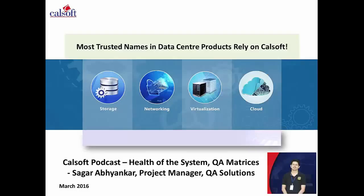A very warm welcome to the CalSoft Podcast Series. This is your host, Mark Roderick. With me today I have Sagar Abhyankar. We've had Sagar on the show before — welcome back again, Sagar. A quick recap on Sagar: he's a Scrum Alliance Certified Scrum Master with 10 plus years of experience in testing and delivering world-class products developed using the waterfall and agile methods. He is now a project manager at CalSoft with a focus on QA solutions. Sagar is with us today to discuss a topic called QA matrices — the health of the system.